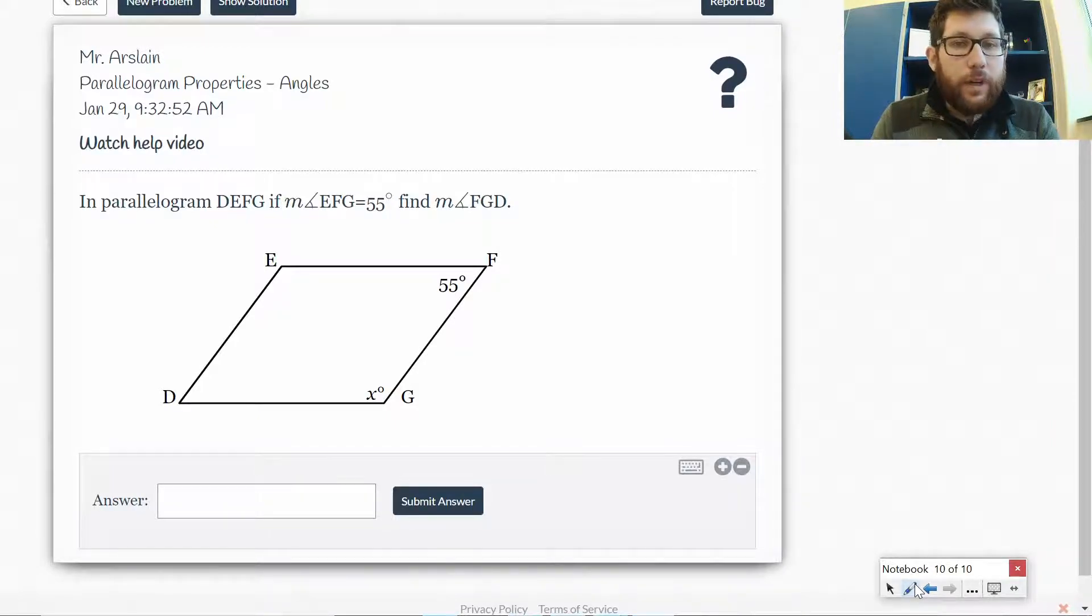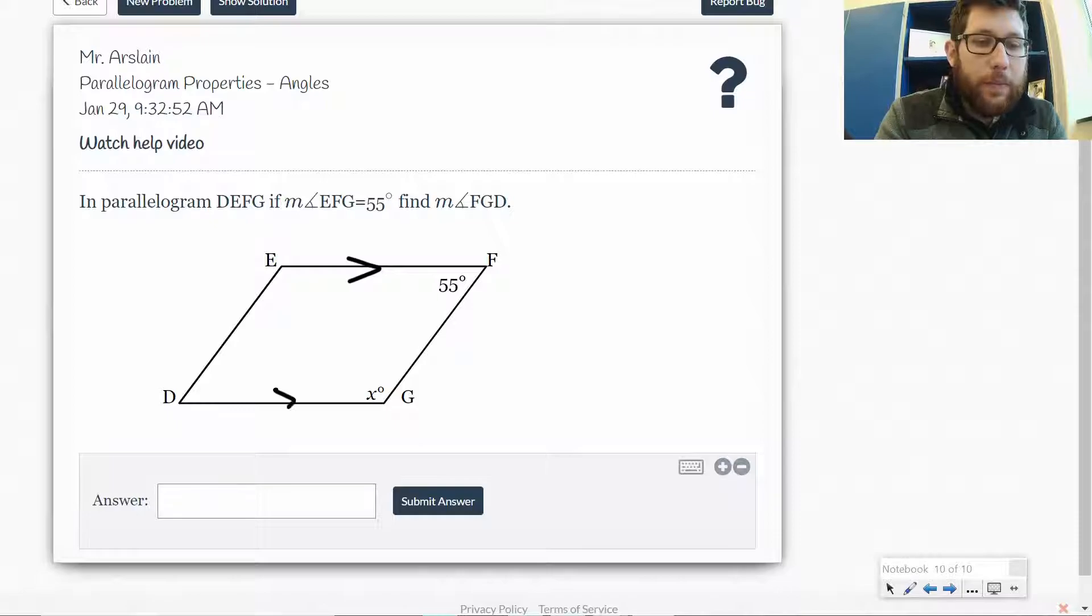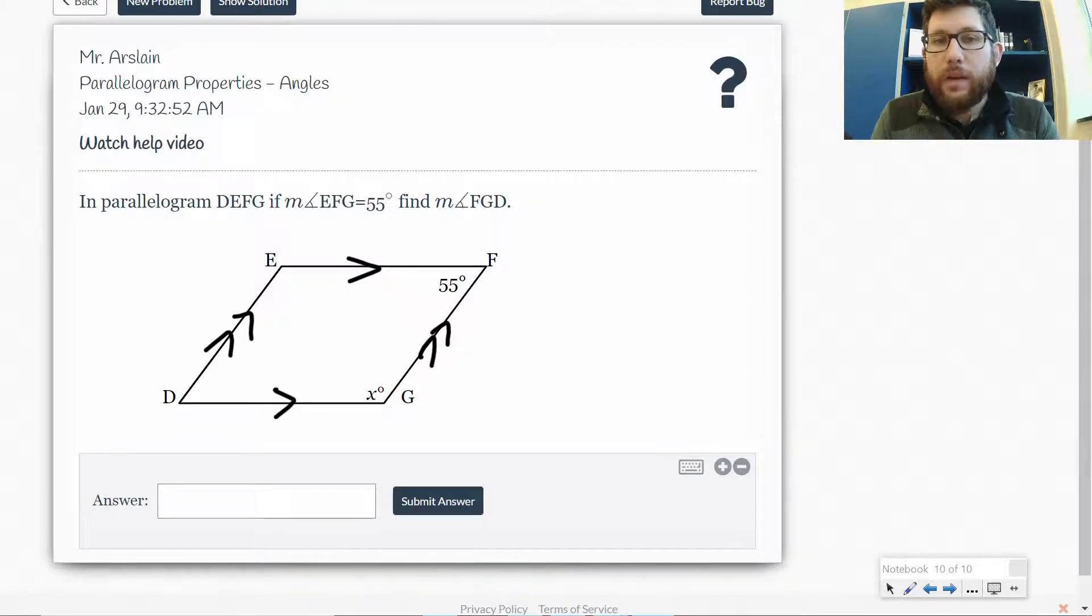So the first one is that angles opposite each other are equal. So when I have a parallelogram, now you might be saying, what's a parallelogram? A parallelogram is a four-sided shape that has parallel sides. Remember those arrows mean parallel. Parallel means they're going in the same direction. So I've got two sets of parallel sides.